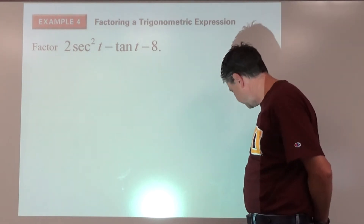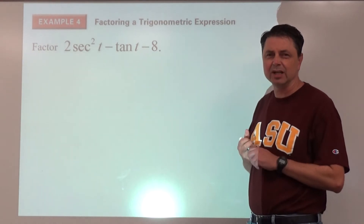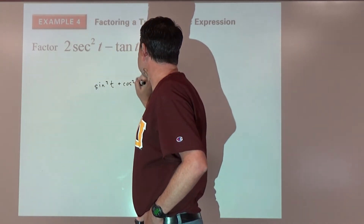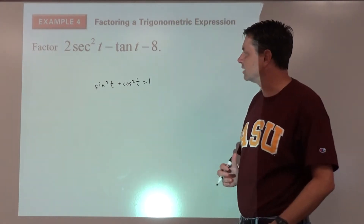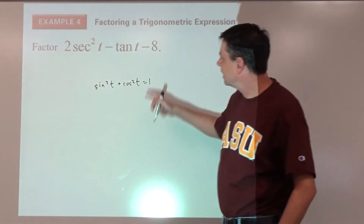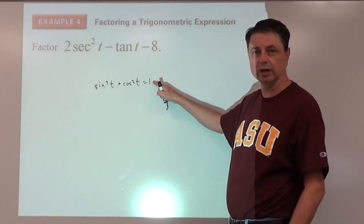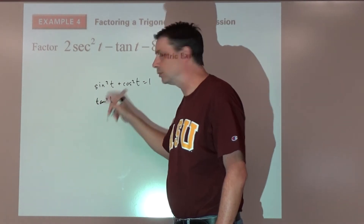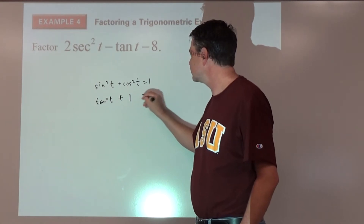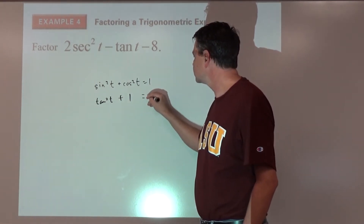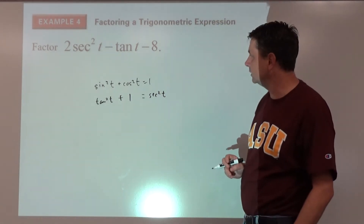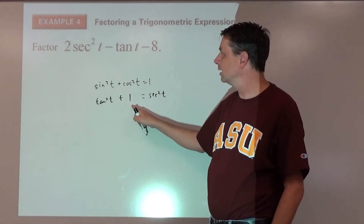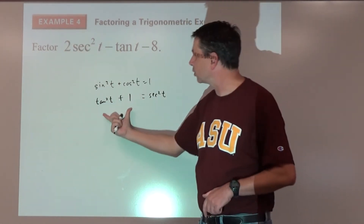Starting from sine squared t plus cosine squared t equals one, divide everything by cosine squared t. By the quotient identity, we get tangent squared t plus one equals secant squared t. So we can replace secant squared t with tangent squared t plus one — keeping in mind we have to multiply all of that by two, so we put it in parentheses.